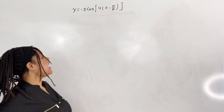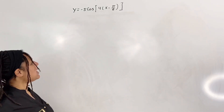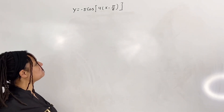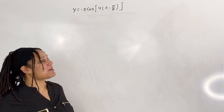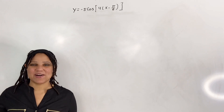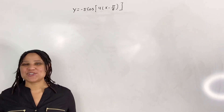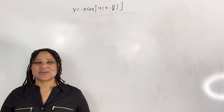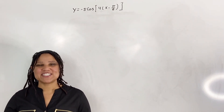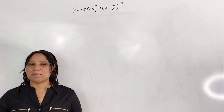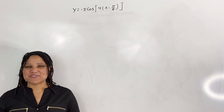Here we have y is equal to negative 5 cosine of 4 times x minus pi over 6. We want to graph the cosine function with multiple transformations.